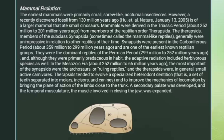Mammal Evolution: The earliest mammals were primarily small, shrew-like, nocturnal insectivores. However, a recently discovered fossil from 130 million years ago is of a larger mammal that ate small dinosaurs. Mammals were derived in the Triassic period, about 252 million to 201 million years ago.